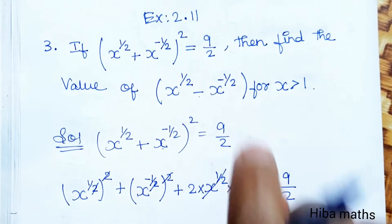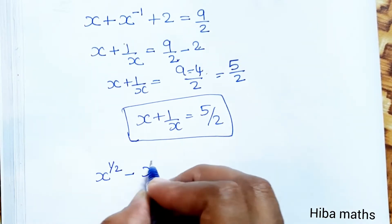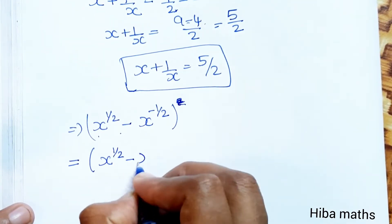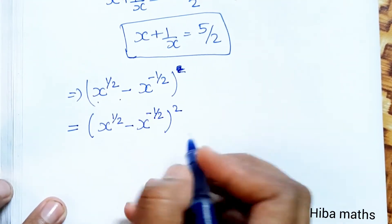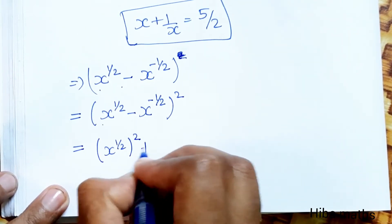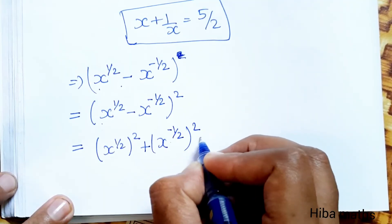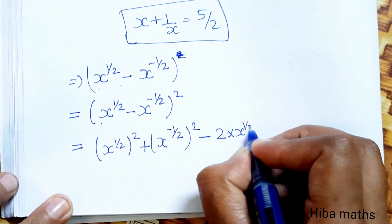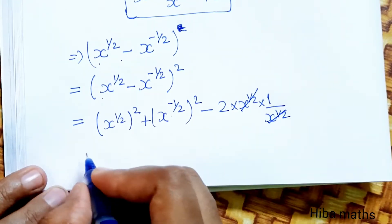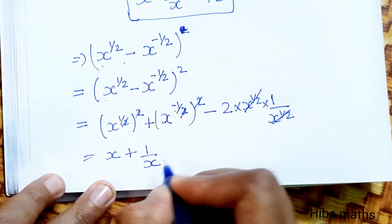Now we will expand this value. x power 1 by 2 minus x power minus 1 by 2, whole square: that is x power 1 by 2 squared, plus x power minus 1 by 2 whole squared, minus 2 times a times b. So minus 2 into x power 1 by 2 into x power minus 1 by 2. The powers cancel, x terms cancel, giving x plus 1 by x minus 2, which equals 5 by 2 minus 2, so the result is 1 by 2.